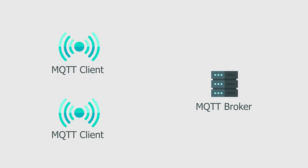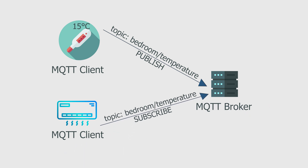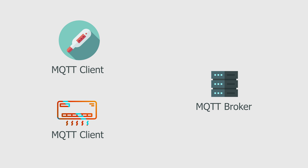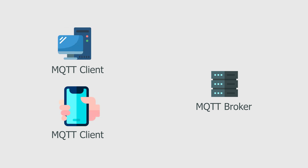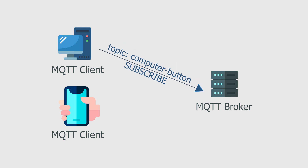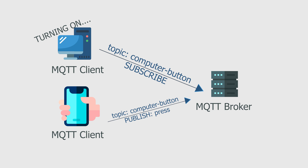Imagine we have a temperature sensor in our bedroom. We can have a topic named 'bedroom temperature' on which our sensor will publish temperature from time to time. Our heating system can be subscribed to that topic and adjust accordingly. And in today's video, we'll have the computer button subscribe to our 'computer power' topic, and when we publish a message, the computer button will act accordingly.